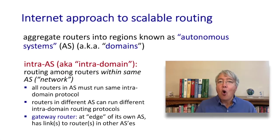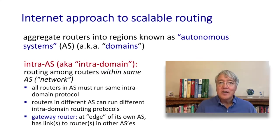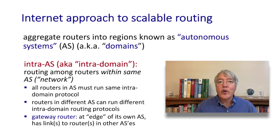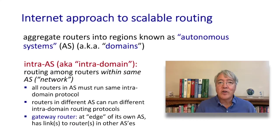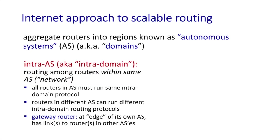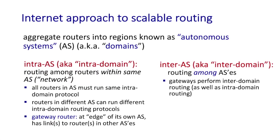Routing within a network or autonomous system is known as intra-domain routing. In intra-domain routing, all routers within the domain execute the same routing protocol, but different autonomous systems can choose their own. At the edge of every autonomous system is a gateway router that connects one autonomous system to another, performing inter-domain routing as well as participating in intra-domain routing.